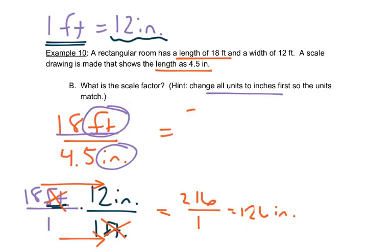So 18 feet is the same as 216 inches over 4.5 inches. Now again, the units match—one on top, one on bottom—so they cancel out. We'll reduce this by dividing the top and the bottom by 4.5.